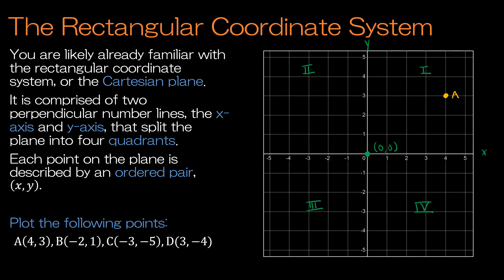So B is (-2, 1), so that would be negative 2 on the x and positive 1 on the y, so that's in the second quadrant. C is (-3, -5). Again, we're going left and right first, up and down second, and that's in the third quadrant. And D is (3, -4), so this is point D in the fourth quadrant.